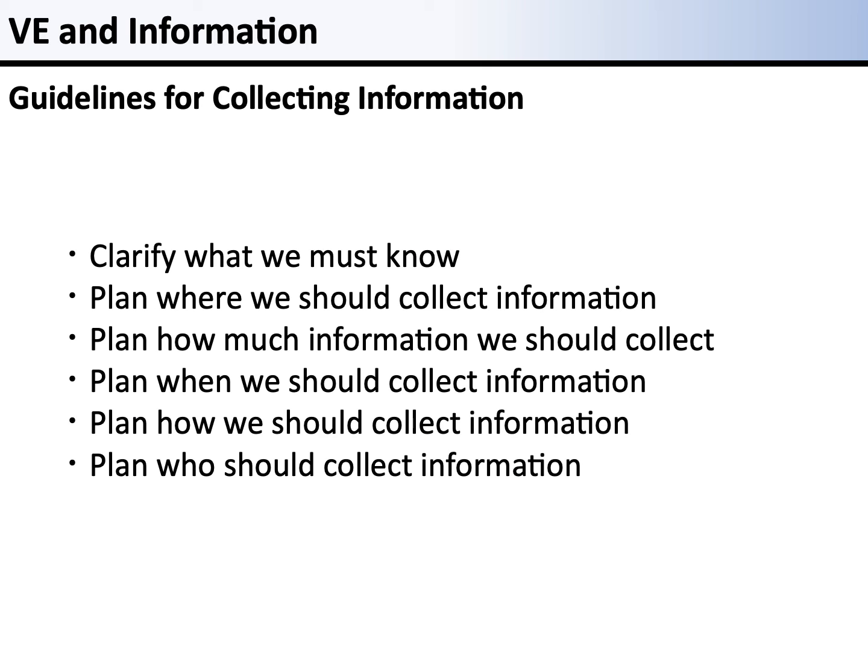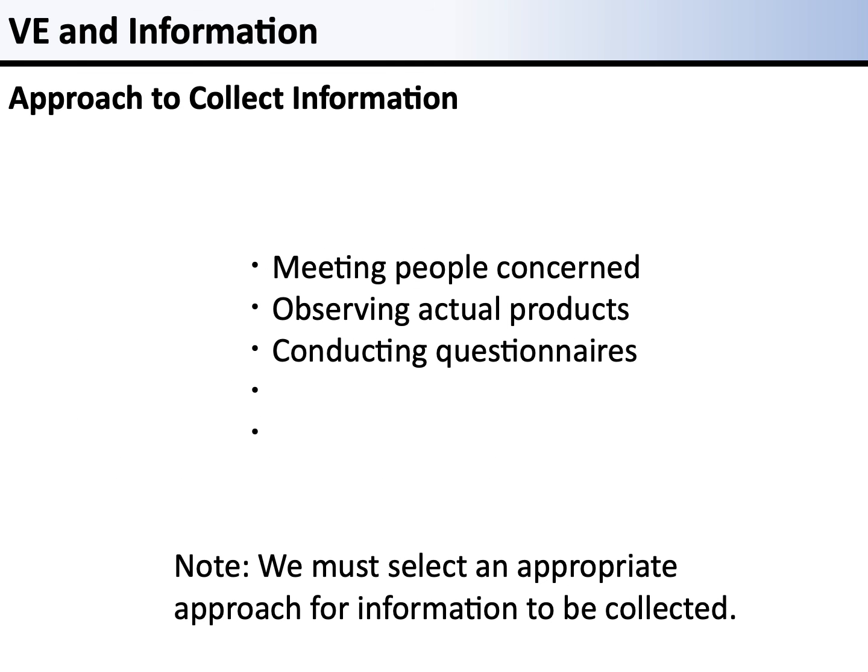Efficiently collecting information requires defining the objective for collecting information, planning how the information should be collected, and conducting activities as planned. We propose six guidelines for planning in VE. Collecting information randomly will be only time-consuming. Especially when internet search is common nowadays, we may spend too much time on collecting information. We must always focus on these guidelines for collecting information with the objective. Possible approaches include meeting people concerned in person, observing actual products, and conducting questionnaires. We should select an appropriate approach for the information to be collected.